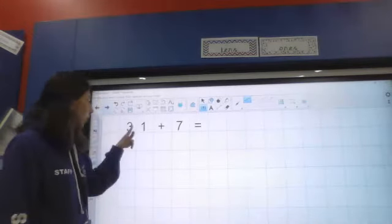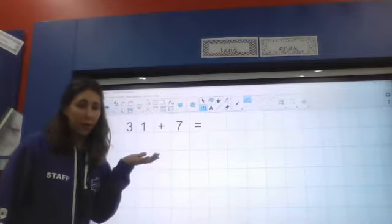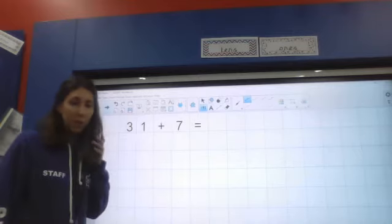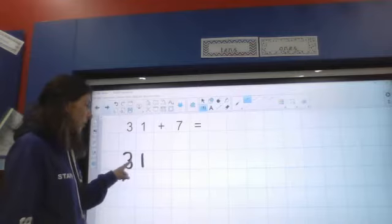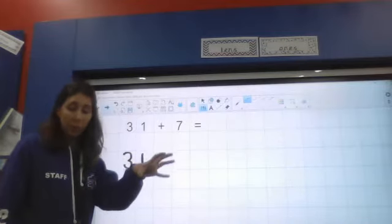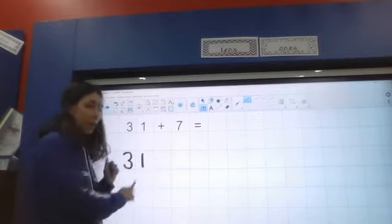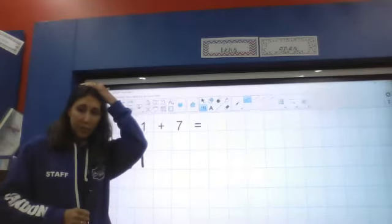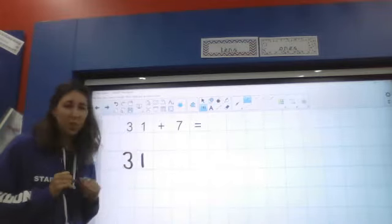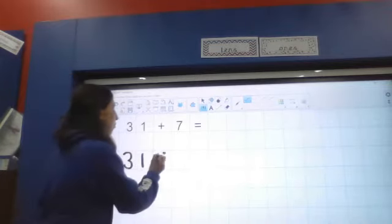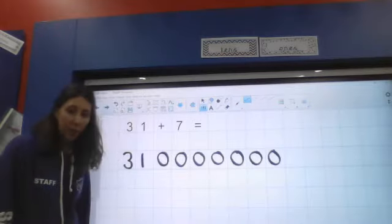My next one then is 31 add 7. This time I'm doing a two-digit number add a one-digit number. So I might tackle this question in a different kind of way. What we've practiced doing in school is putting the biggest number in our heads and almost drawing out our own number line. So 31 is going to go in my head and I'm going to count on because when we're adding we want the answer to get bigger. That's what we do when we add, we get more, we have bigger numbers so we count on. I need to count on seven times. To make sure we get the right numbers, I'm going to draw seven circles: one, two, three, four, five, six, seven.